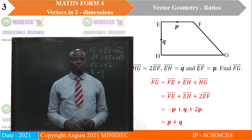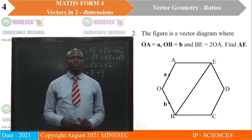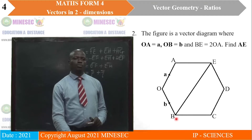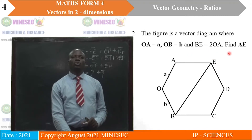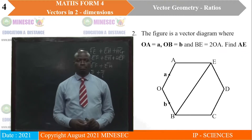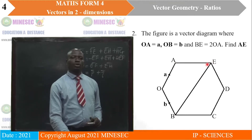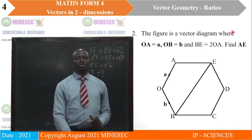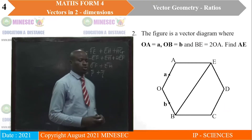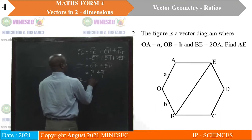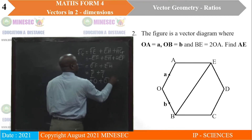Let's move on to the next question. The figure is a vector diagram where vector OA is equal to vector small a, vector OB is equal to vector b. We are also told that BE is the same as 2OA. Find AE. To move from A to E, we will move down this way and then come up this way, following BE because we have information there. So vector AE is equal to AO plus OB plus BE.